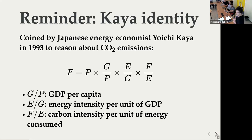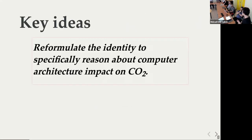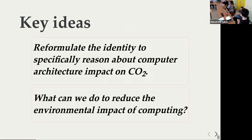One example of use of this identity is how to reduce CO2 emissions. If you want to go green on power plants, it's this factor you will decrease. But maybe this action will increase output also, so you may not actually decrease CO2 emissions. You need to think globally, but it helps to pinpoint where you want to take action on CO2. The idea of this paper is to reformulate the Kaya Identity to specifically reason about computer architecture — chip design, computer design, electronics — for the impact on CO2, and more importantly, what we can do as computer architects to reduce the environmental impacts of computing.